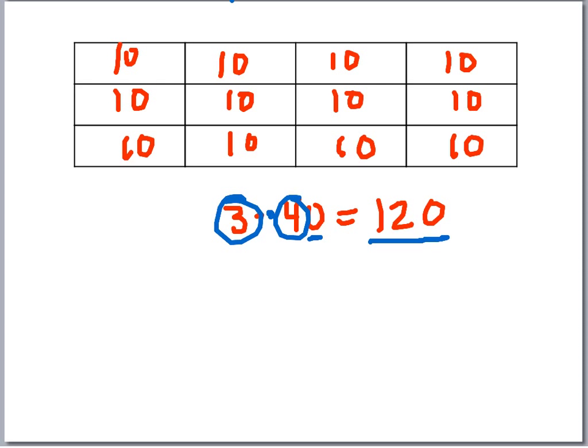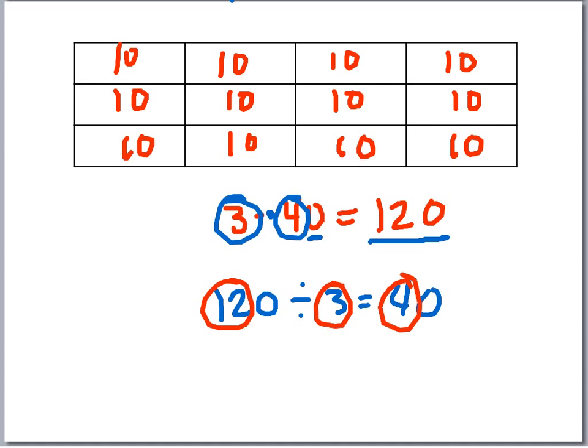Conversely, you can do the opposites. Knowing there are one hundred twenty books in all three equal rows, we can write a related division sentence to find how many books are in each row: one hundred twenty divided by three equals forty. Again, you see the basic math fact — twelve divided by three gets you four. There's a zero on one side, so you add a zero on the other side too. Just keep your zeros in check and look for those basic multiplication and division facts.